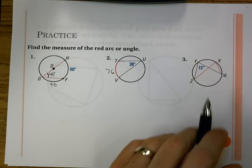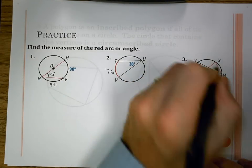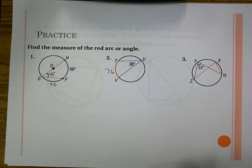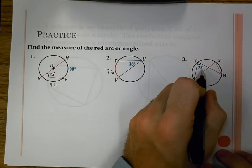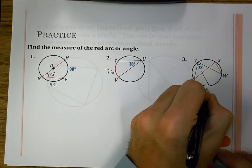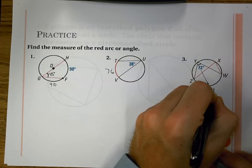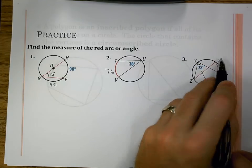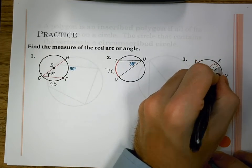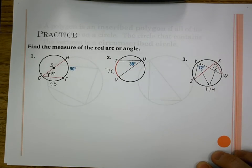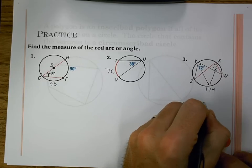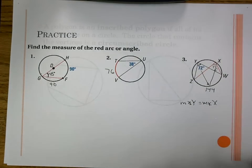Number three: angle Y is 72. Looking at it the long way — angle Y goes to arc ZW, so that arc is 144. Then to find angle X, take half of 144, which is 72. The angles go to the same arc, therefore they're congruent. The measure of angle Y equals the measure of angle X, so they're both 72.